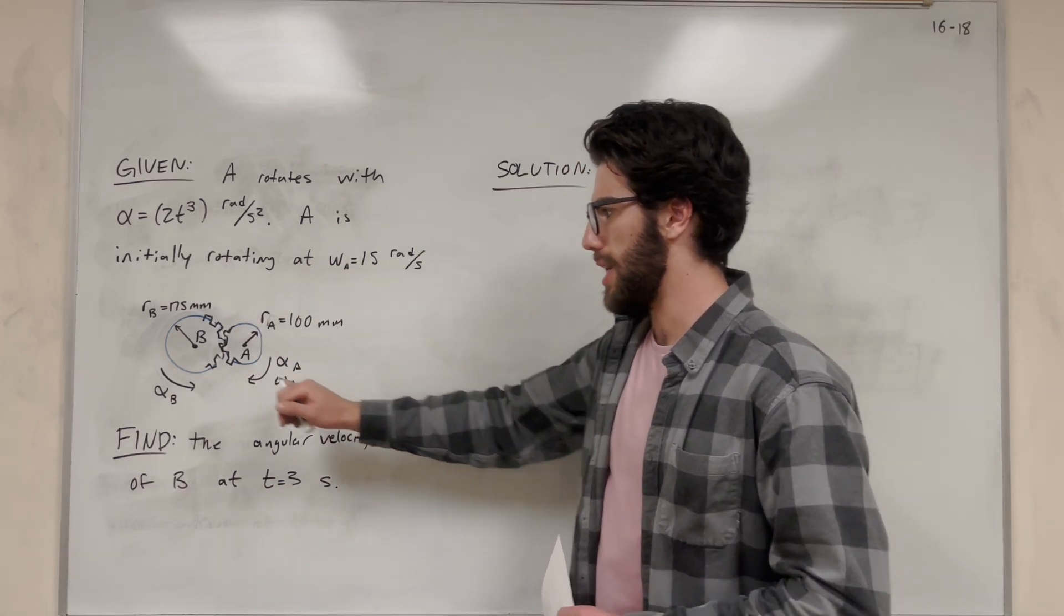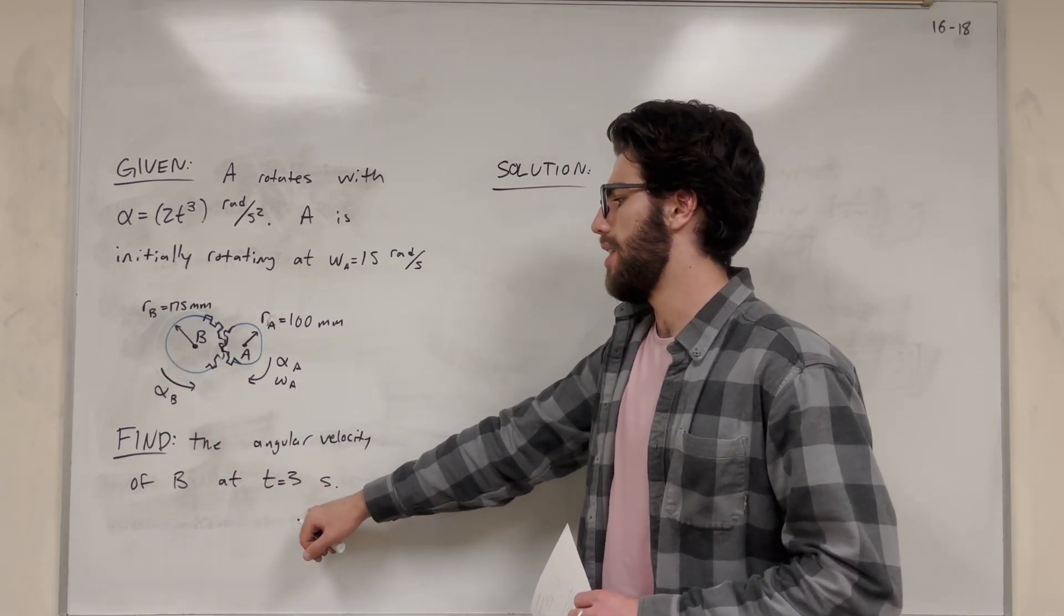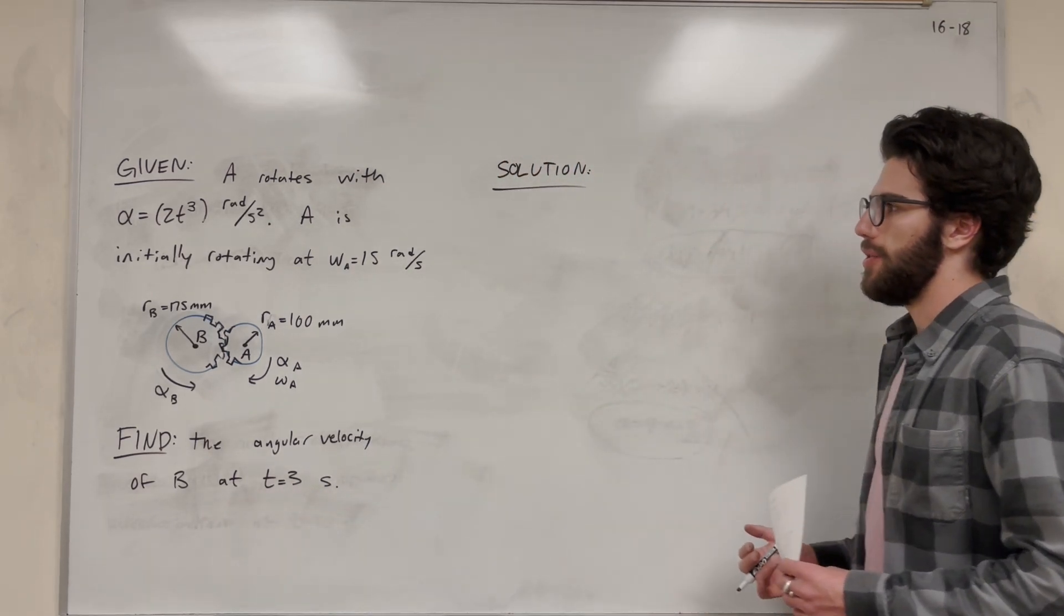So our goal is to find the angular velocity of B, this other gear that's locked in with A, at 3 seconds. So how are we going to do this?